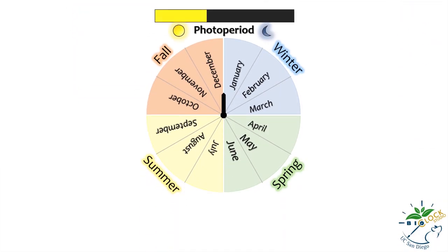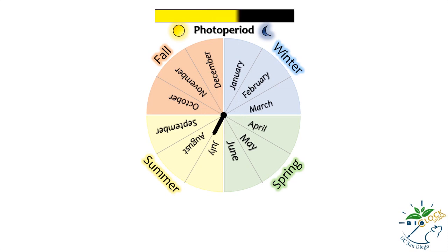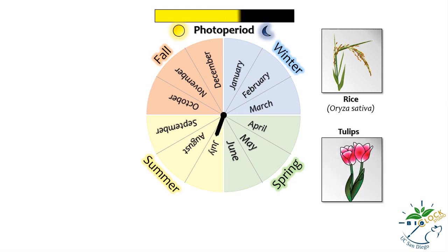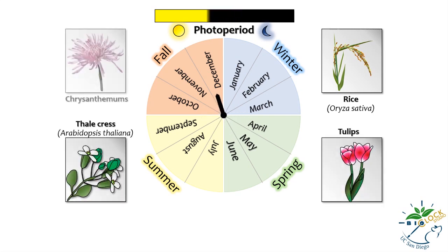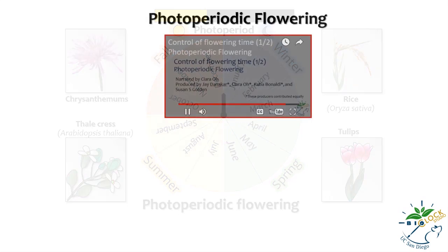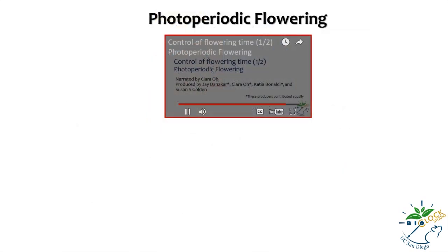The change in daylight length at a specific location throughout the year, also called photoperiod, is entirely predictable from one year to another. It is so predictable that plants rely on this signal to keep track of the seasons and to flower at the right time, a phenomenon called photoperiodic flowering. For a broader introduction to photoperiodic flowering, please refer to the previous tutorial.